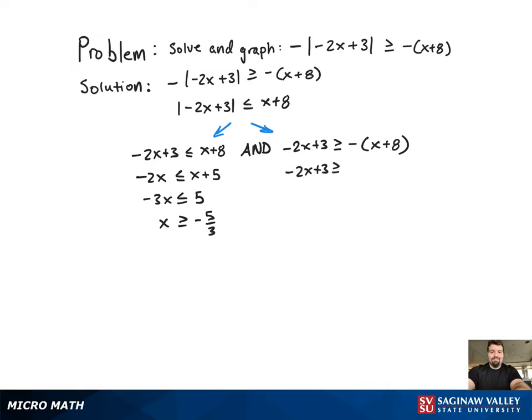Doing similar algebra on the right hand side, distribute the negative first. Again, get all the constants to one side, variables to the other, divide by the negative 1. Don't forget to flip the inequality symbol.